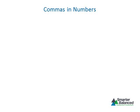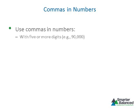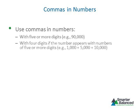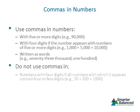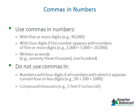For all grades, there are rules that must be followed when using commas in numbers. Use commas in numbers with five or more digits, numbers with four digits if they appear alongside numbers of five or more digits, and numbers written as words. Do not use commas in numbers with four digits if all numbers they appear with contain four or fewer digits, or in compound measures.